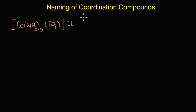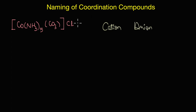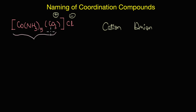In this video we are going to look at a few coordination compounds and try naming them based on the rules that we have just studied. Here is the first coordination compound. The first rule is that we name the cation before the anion. In this particular compound, the coordination entity is the cationic part and the counter ion is the anionic part, so the chloride part would be at the end of the name.